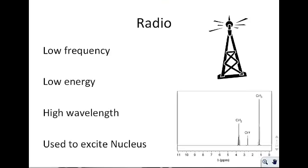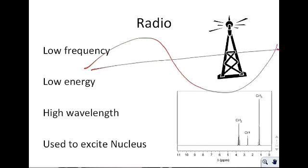Walking through the EM spectrum: radio waves are the lowest in energy, the lowest in frequency, and the highest in wavelength. Wavelength refers to the size of one complete wave from crest to crest. Radio waves have such low energy that they generally don't interact with electrons — instead they can be used to excite the nucleus, as in nuclear magnetic resonance. We can find out information by exciting a nucleus with radio waves.